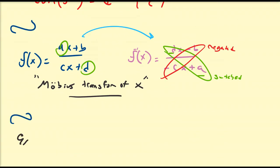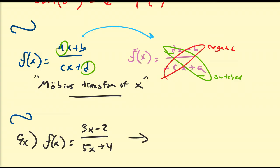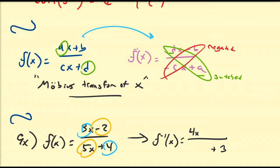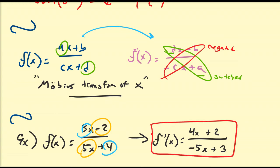So let's do an example just to illustrate this. Assume we have the Möbius transformation f of x equal to 3x minus 2 all over 5x plus 4. Using this observation, f inverse of x: we switch 3 and 4, giving us 4x plus 3 on the bottom. Then we negate b and c components, giving us positive 2 on top and minus 5x on the bottom. So f inverse of x equals 4x plus 2 all over negative 5x plus 3.